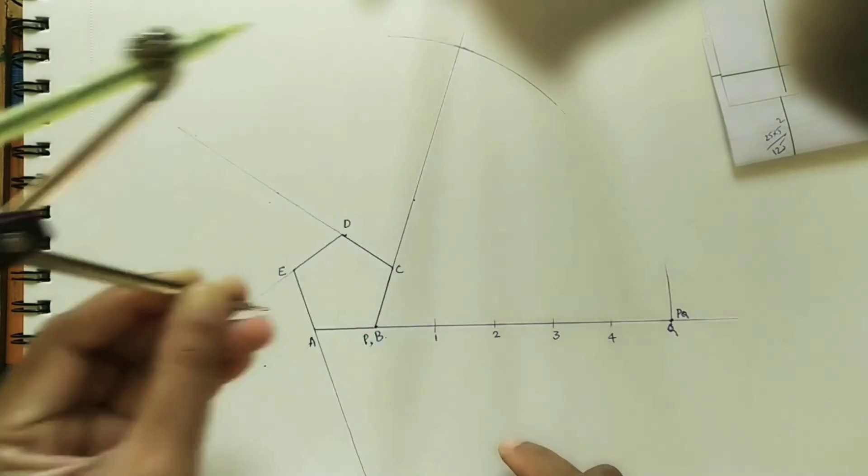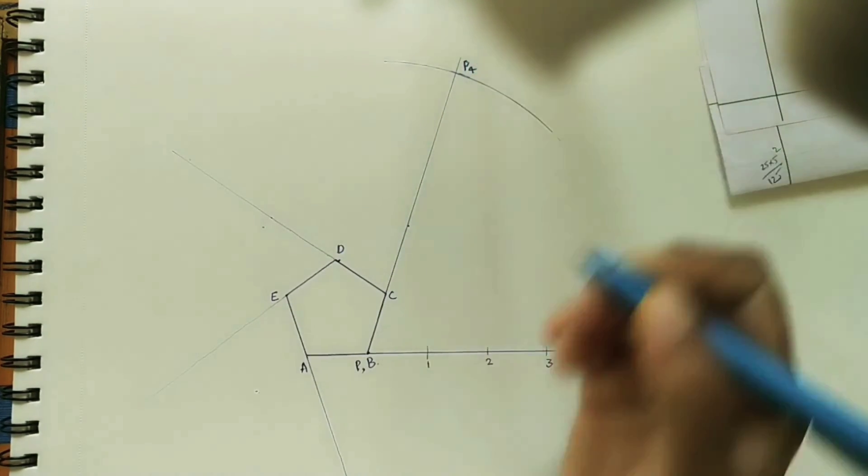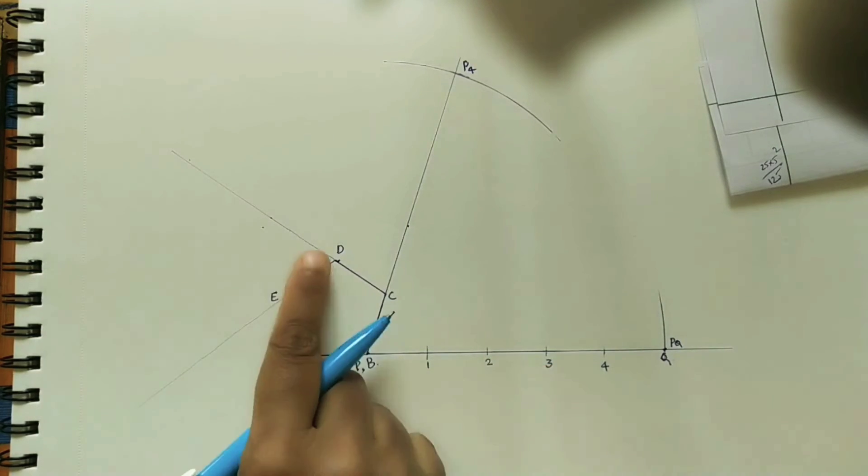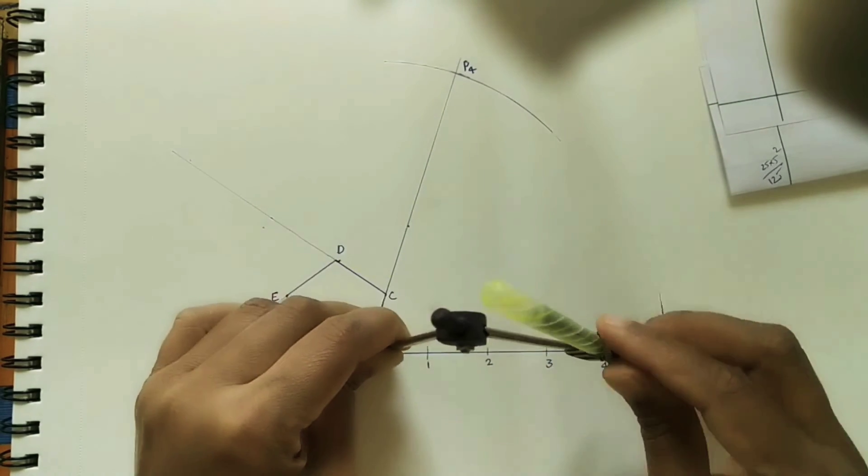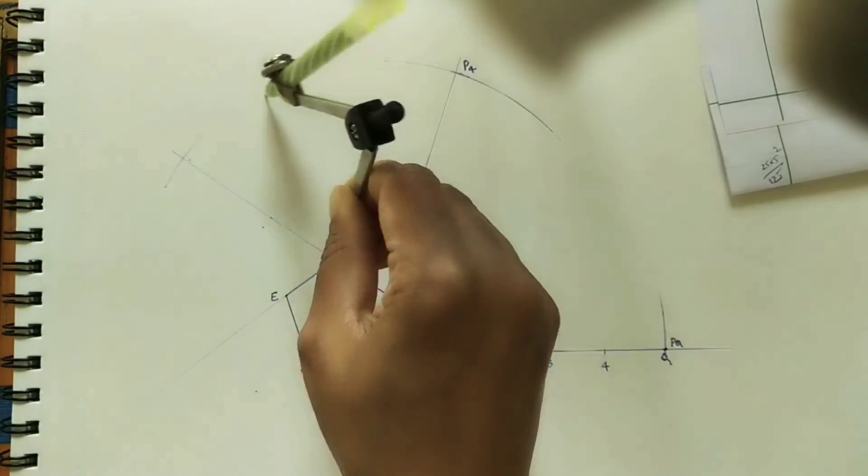Take the bigger arc so that at the end we can draw the involute easily. Mark P4 length here. P4 point. Next, take P3, mark on the third side. By using compass, take P3 length, mark on the third side. Take the bigger one, mark P3 length here, P3 point intersection point.